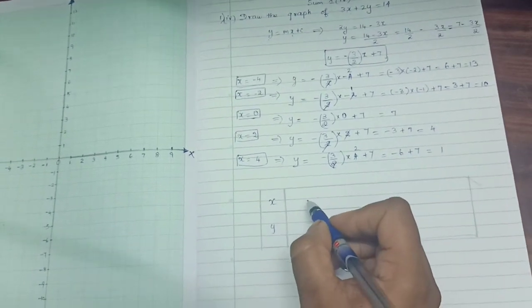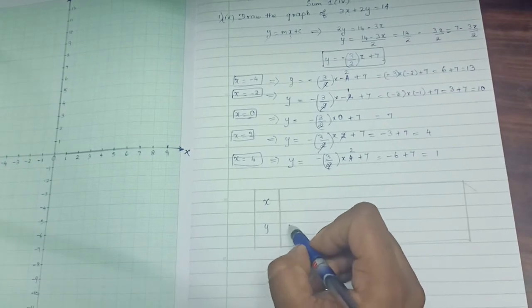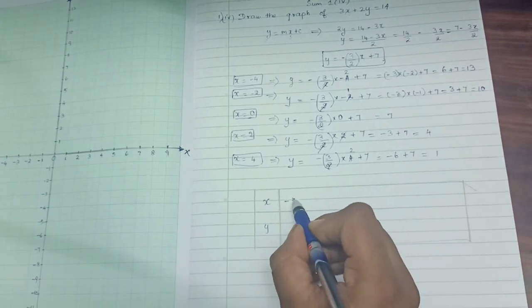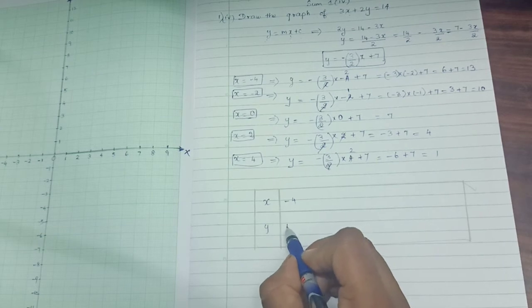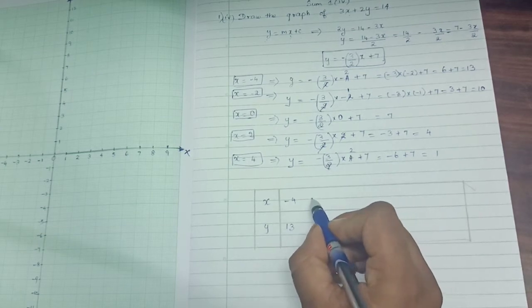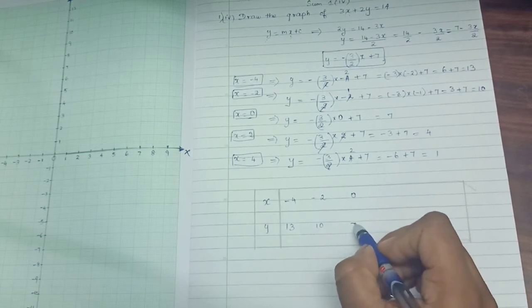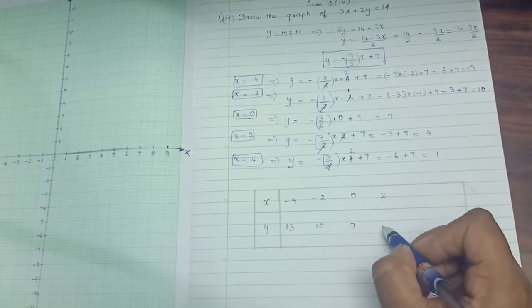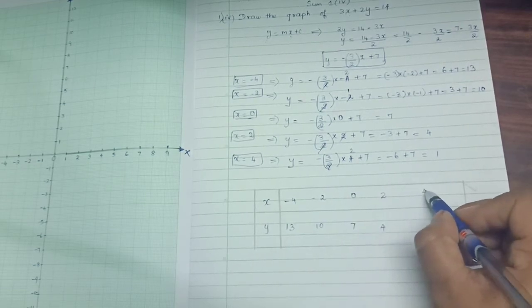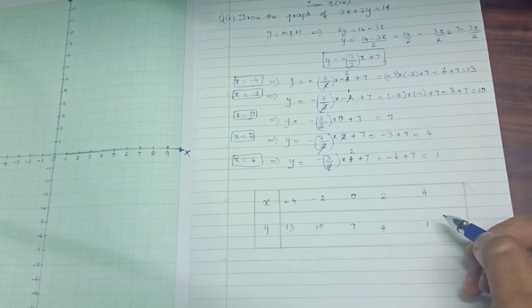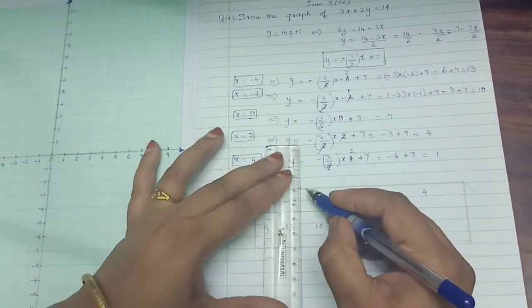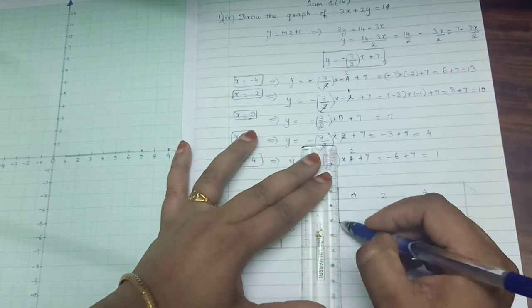So we can start writing the values for x and y in the tabular column. When x is minus 4, y value is 13. When x is minus 2, y is 10. When x is 0, y is 7. When x is 2, y is 4. When x is 4, y is 1. So neatly you can put the tabular column.